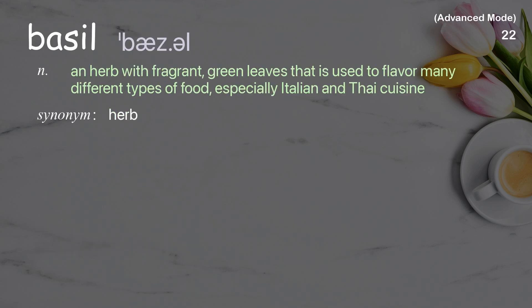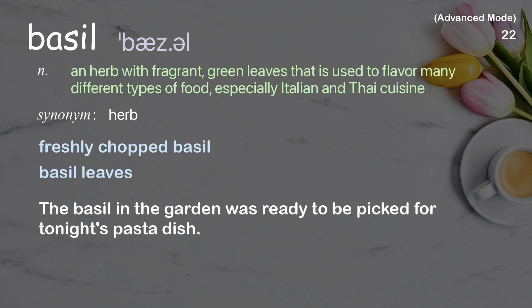Basil: An herb with fragrant, green leaves that is used to flavor many different types of food, especially Italian and Thai cuisine. Examples: Freshly chopped basil. The basil in the garden was ready to be picked for tonight's pasta dish.